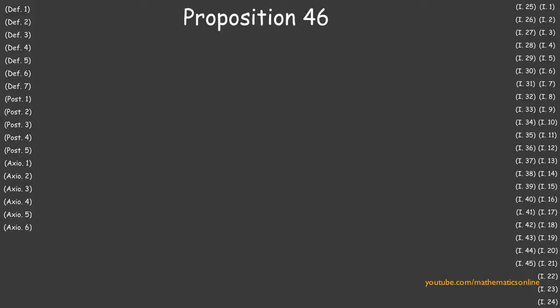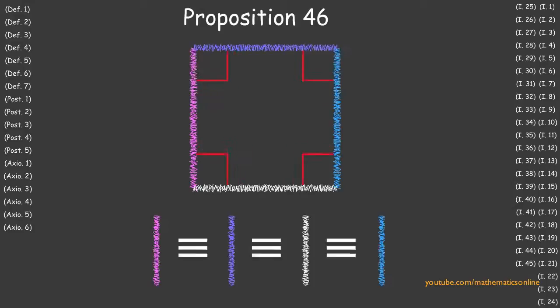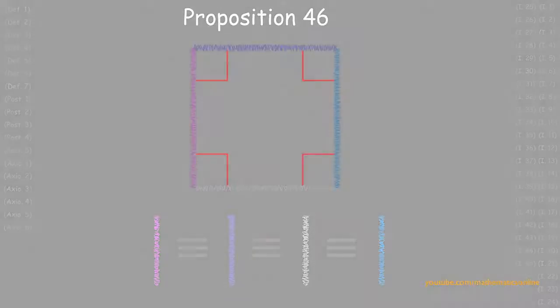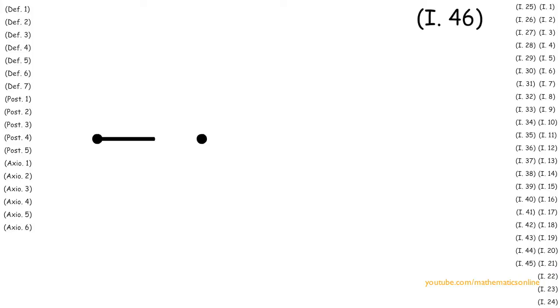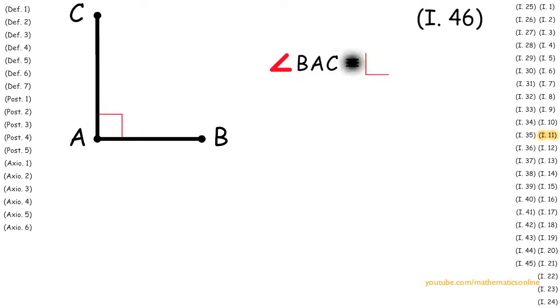In Proposition 46 we prove that with any given line we can always construct a square. To begin we are given line AB. First with point A and line AB we apply Proposition 11 to construct a perpendicular line AC. Therefore angle BAC is a right angle.